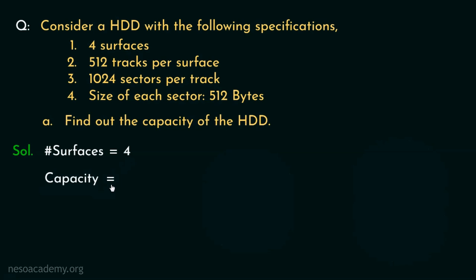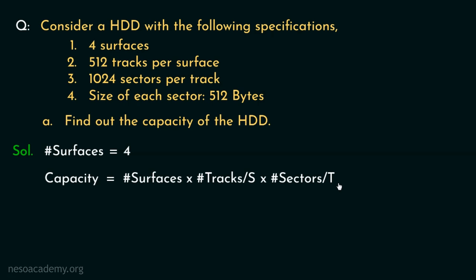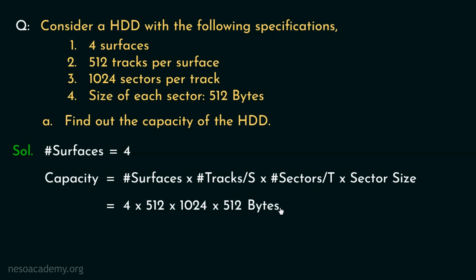The capacity of the entire hard disk drive can be calculated as: number of surfaces multiplied by the number of tracks per surface, multiplied by the number of sectors per track. This gives us the total number of sectors considering all the surfaces. If we then multiply the sector size with this, the total capacity of the hard disk can be found. We have 4 surfaces, 512 tracks in each, 1024 sectors in each track, and the sector size is 512 bytes. So: 4 × 512 × 1024 × 512 bytes. Although this multiplication looks a little tough, it's manageable.